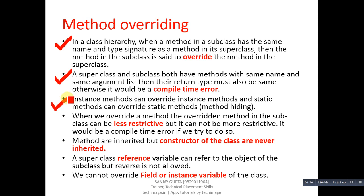The third point says: instance methods can override instance methods, and static methods can override static methods — this you have to remember. The fourth point says: when we override a method, the overridden method in the subclass can be less restrictive but it cannot be more restrictive; it would be a compile-time error if we try to do so.